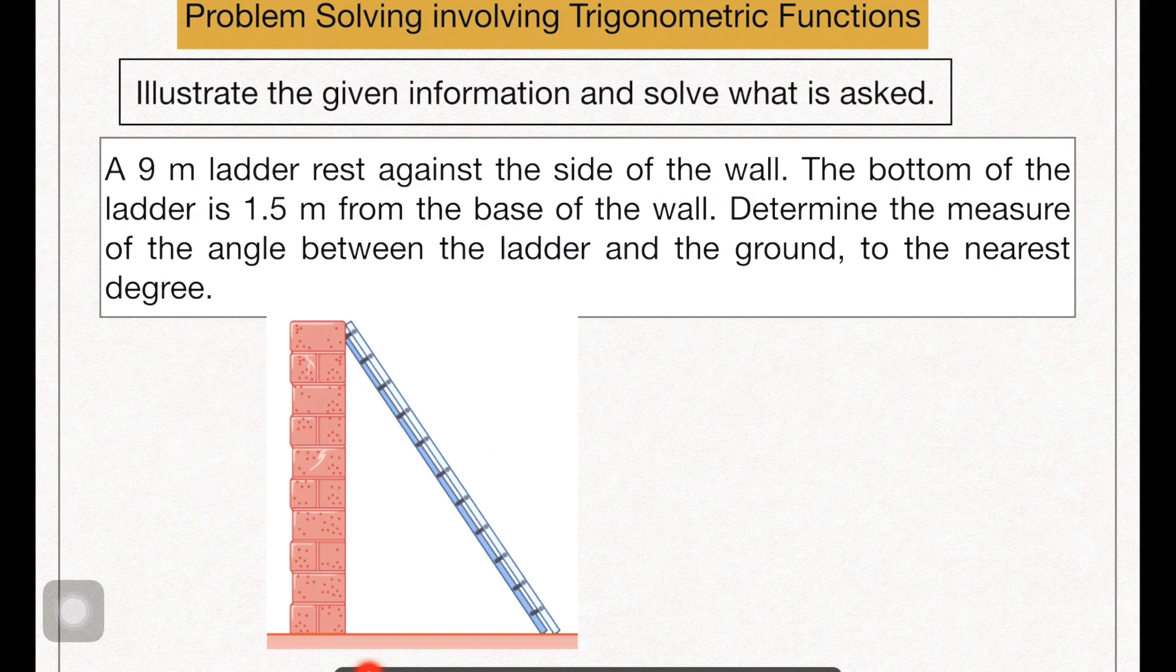And remember that the ladder is nine meters. So that's how we are going to represent this. A nine meter ladder and then the bottom of the ladder is 1.5 meters from the base of the wall.